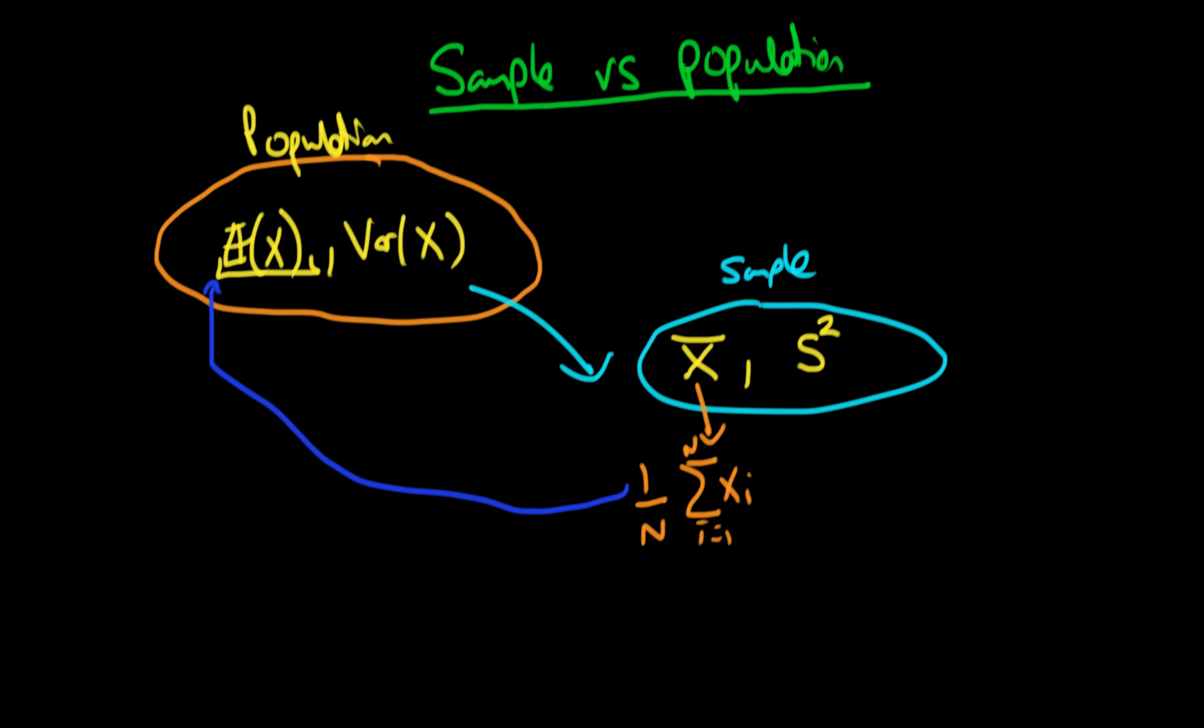And similarly the sample variance, which is an unbiased estimator of the population variance, is 1 over N minus 1 times the sum from i equals 1 to N of xi minus X bar squared.